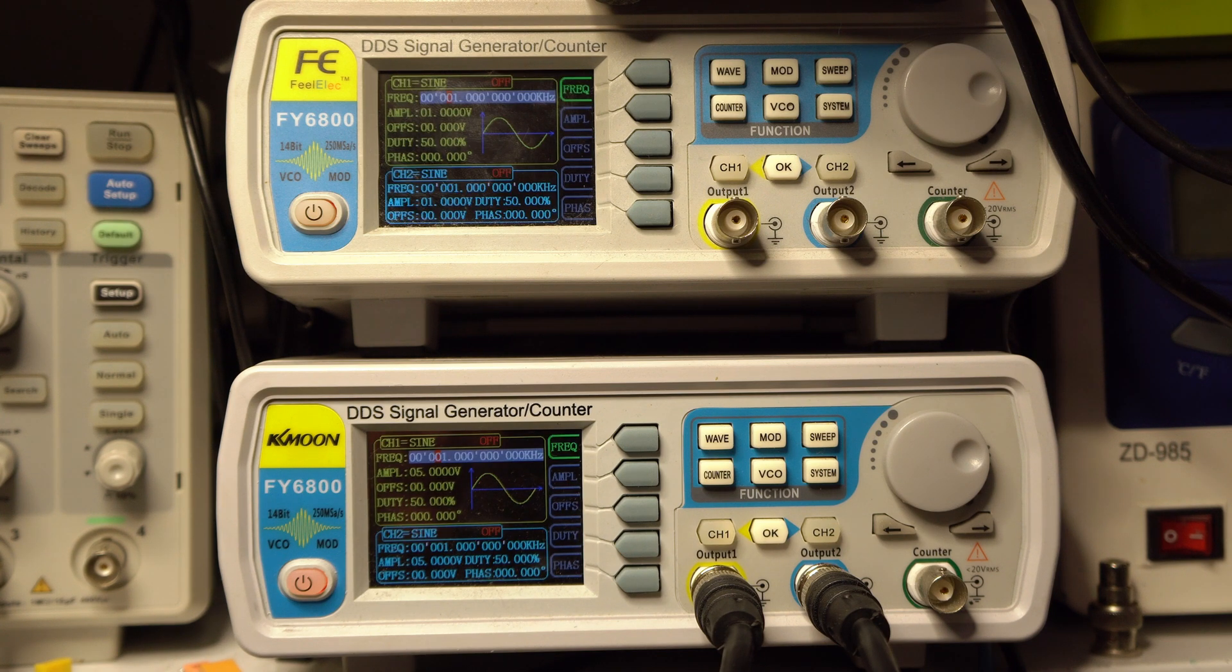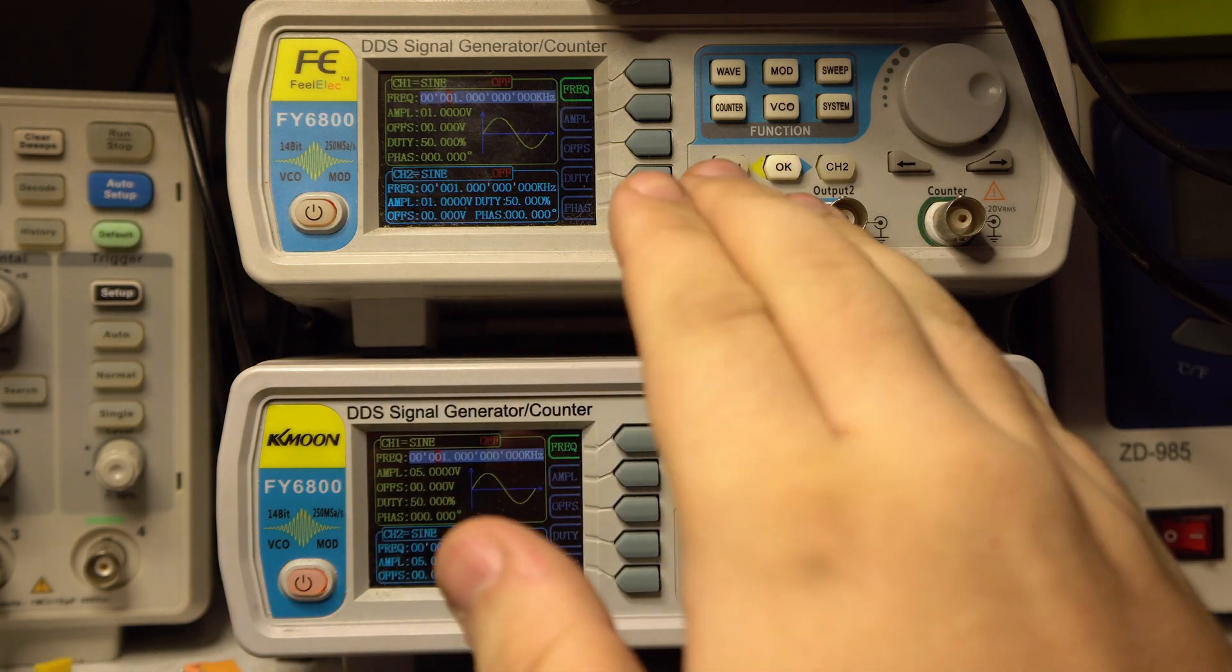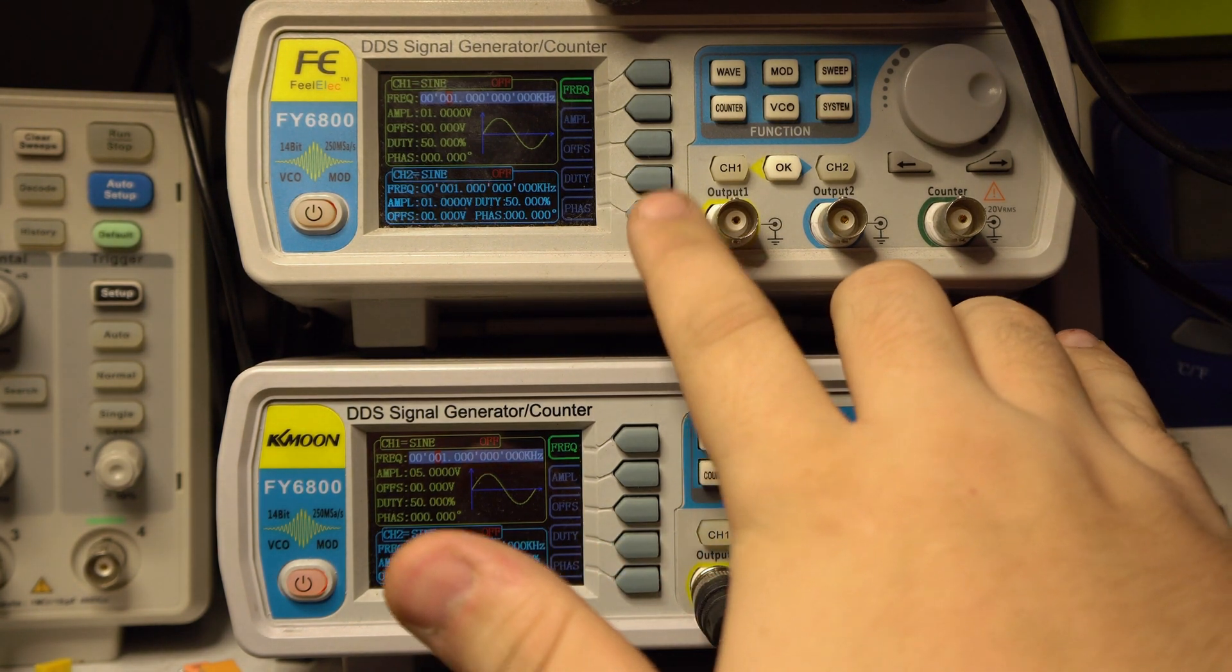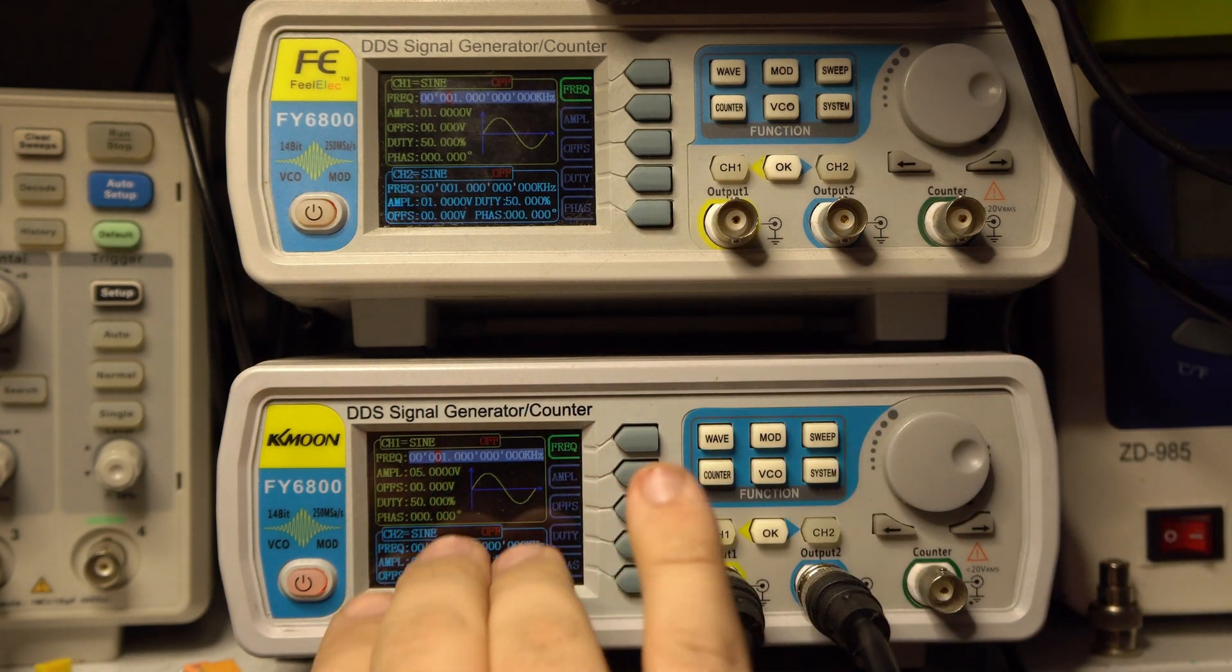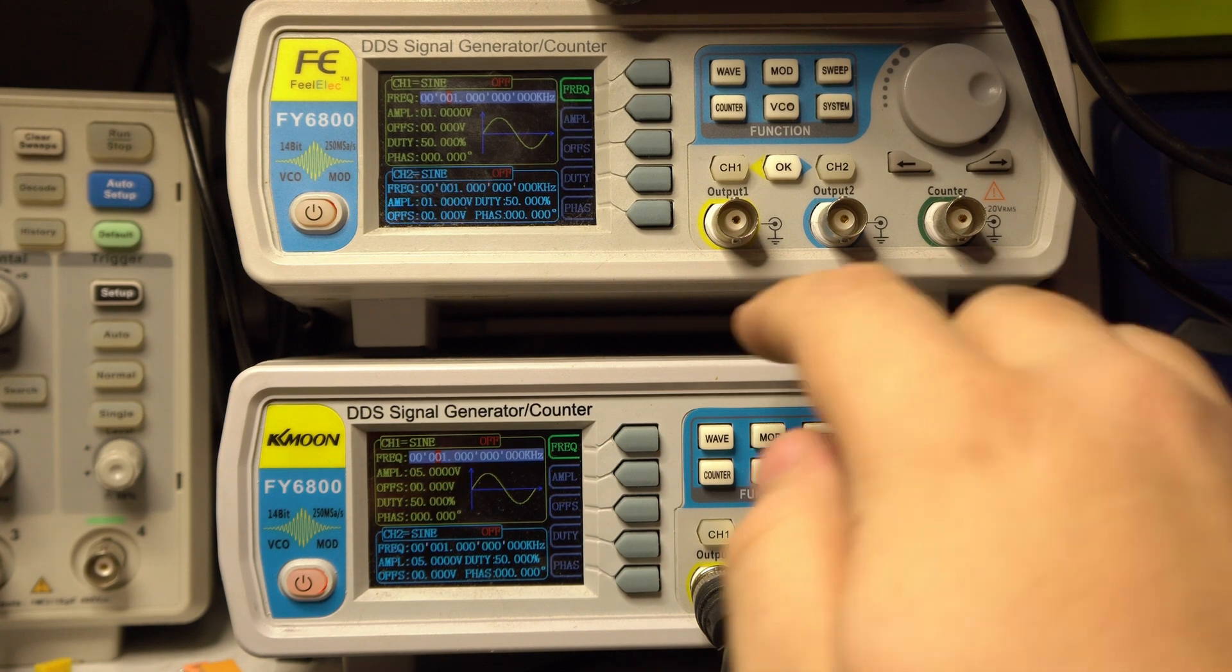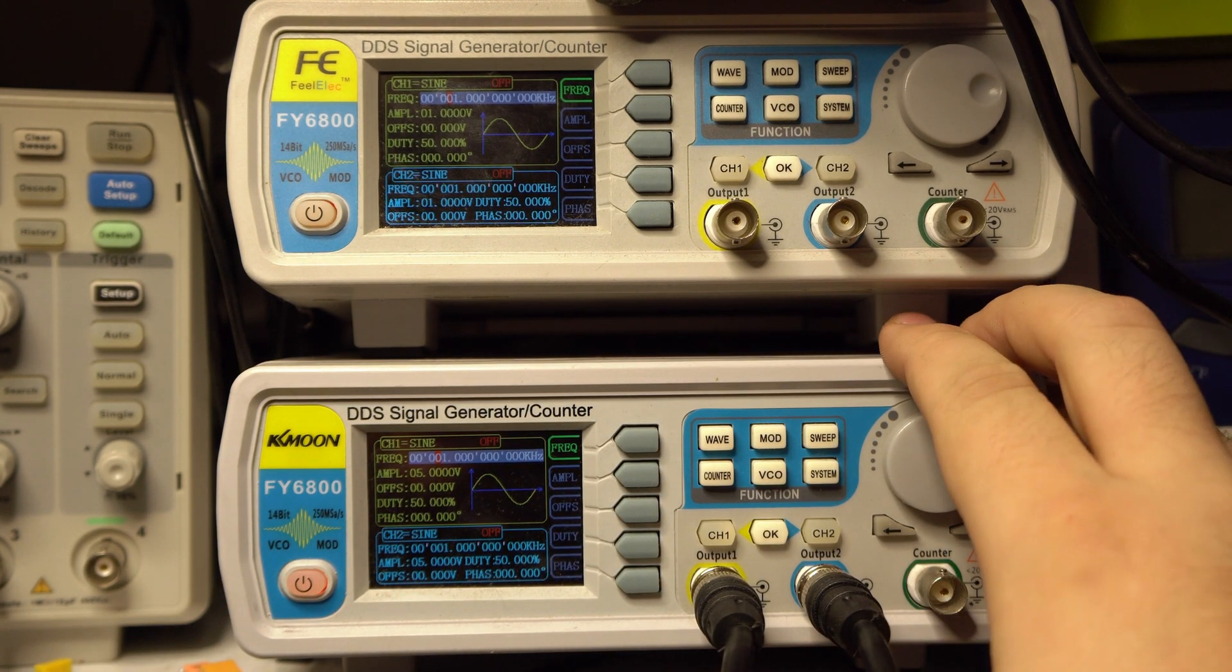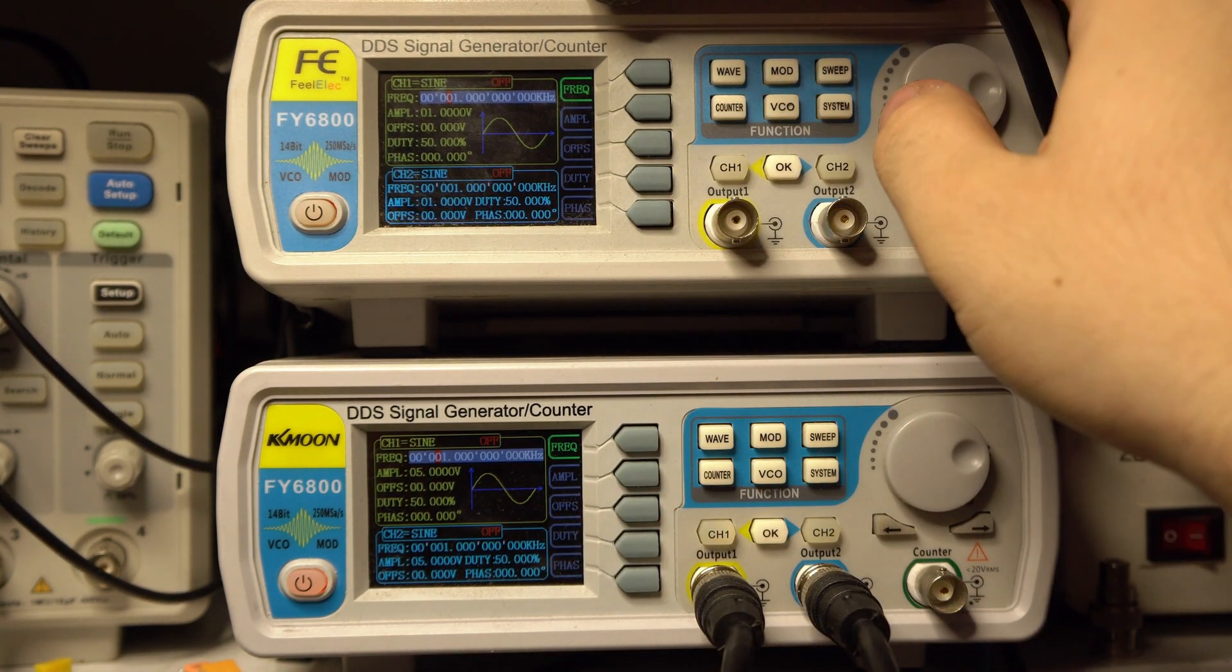These are sold in different megahertz models like 30, 20, 60, and I think the 100 megahertz model is the highest on the 6900. On the 6800 it's 60 megahertz, but they're all internally the same. They all have 250 mega samples per second and all 14 bit, just the firmware is configured differently.